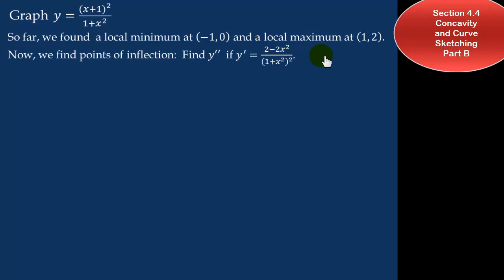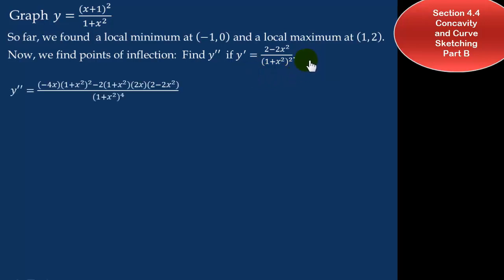We find points of inflection by taking the second derivative. Taking the second derivative means differentiating y prime again. Square the denominator, then on the top take the derivative of 2 minus 2x squared — that's negative 4x — and multiply by the denominator, minus the derivative of the bottom: bring down 2 times 1 plus x squared using the chain rule, multiply the derivative of the inside, which is 2x, by the numerator.